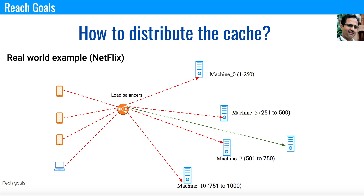Look at the green color on the screen — we are adding a new machine, Machine 6, connecting to the other machines. If we have a new machine, the content in Machine 7 has to be distributed into Machine 6 as well. Now the movie IDs ranging from 501 to 600 go into Machine 6, and Machine 7 will have movie IDs from 601 to 750. There is a challenge here.